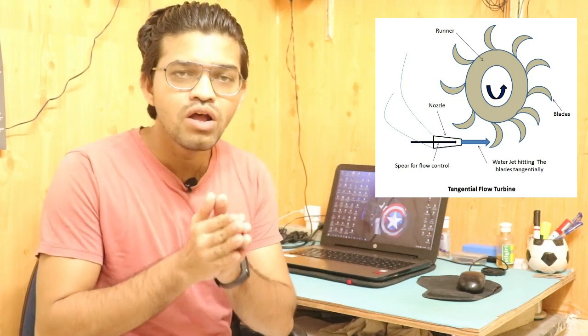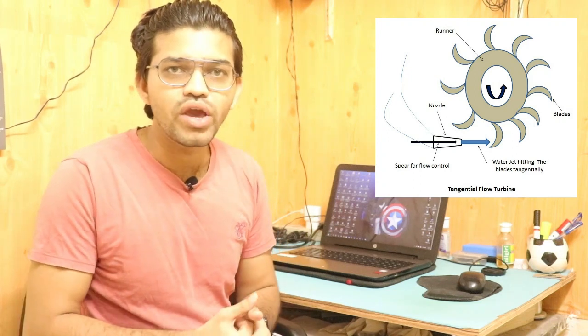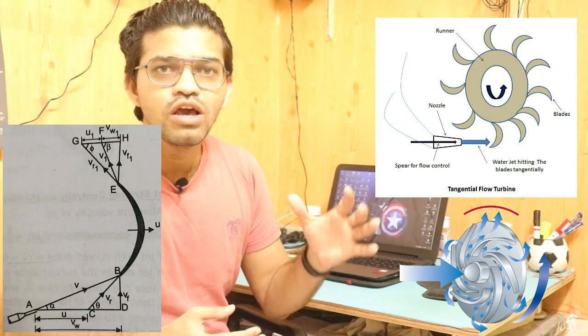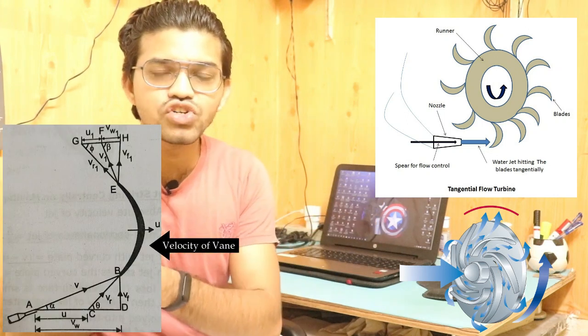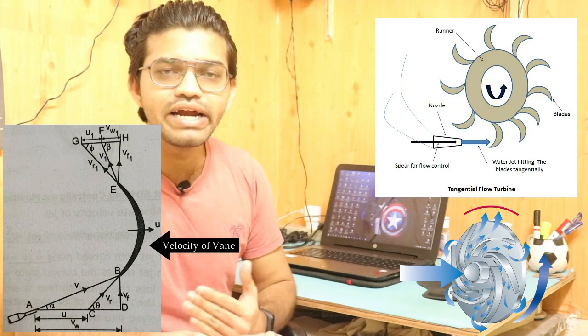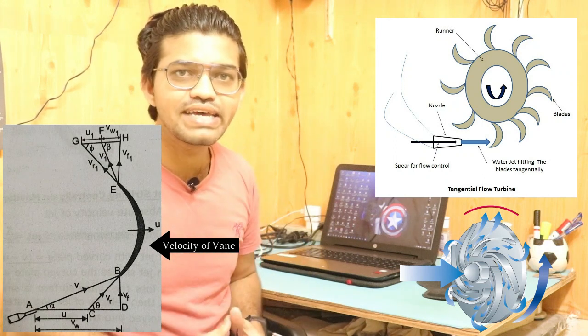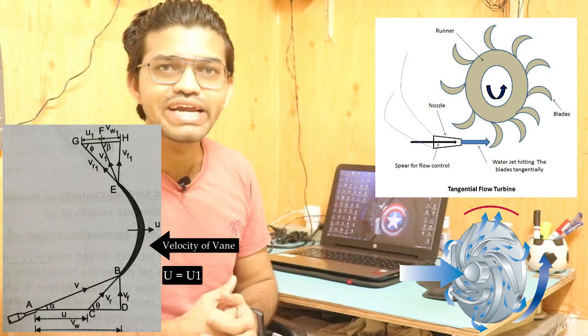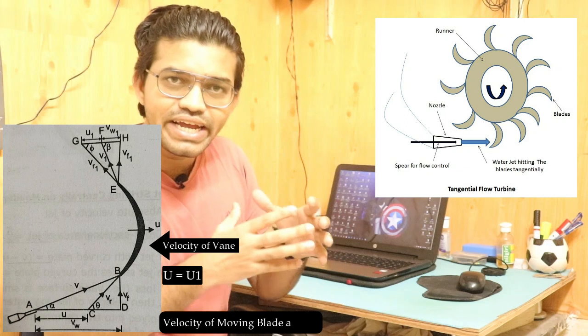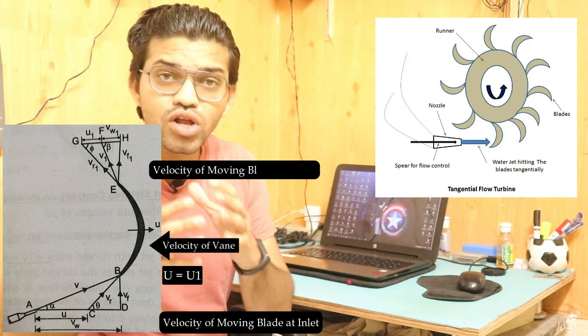The jet of water exerts a force on the turbine grid, and due to the kinetic energy of the water jet, the vane starts rotating. While rotating, the vane also rotates the shaft. The velocity of the vane at inlet is the same as at the outlet, so we can say u equals u1. From the velocity triangles, the velocity of the moving blade at inlet equals the velocity of the moving blade at outlet.